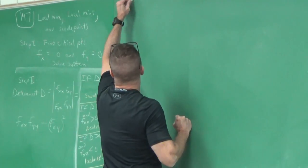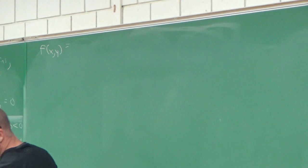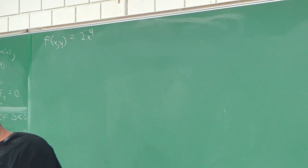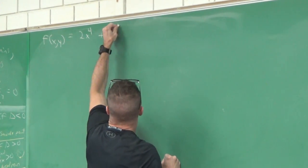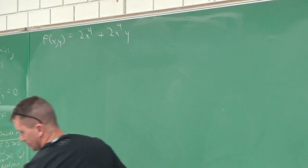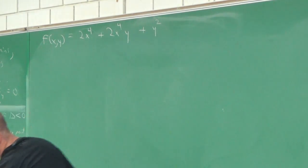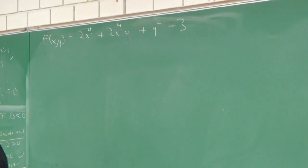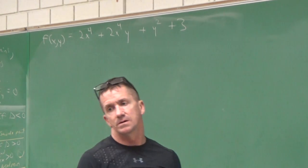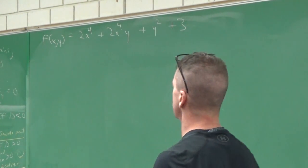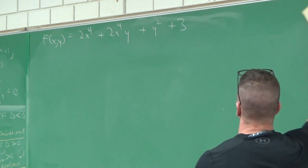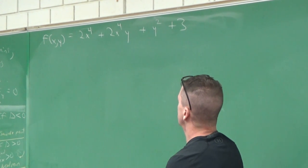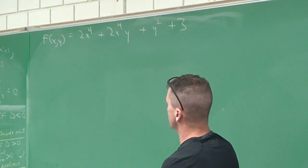Here's the function we're going to work with. It's a function of x and y. I've got f(x,y) = 2x^4 + 2x^4y + y^2 + 3. The question is: find all the local maximum points, local minimum points, and saddle points if they exist. We never know how many critical points we're going to get until we start working on the math.